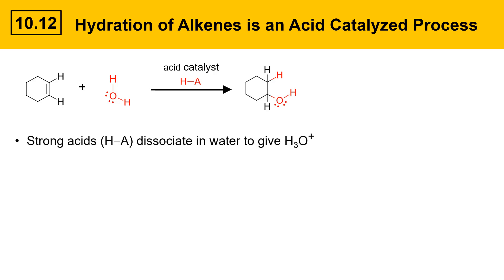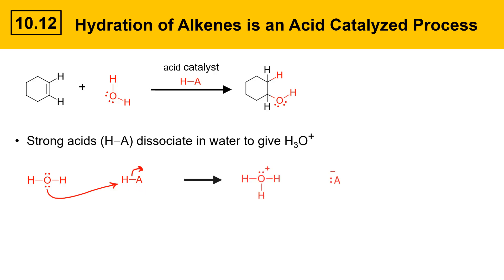Strong acids, HA, dissociate in water to give H3O+, hydronium ion. This is a review of some acid-base chemistry relevant for this reaction. Water reacts with strong acids and gets protonated — water grabs a proton off the strong acid to give hydronium ion, H3O+, and the conjugate base A-.